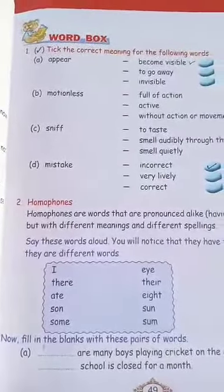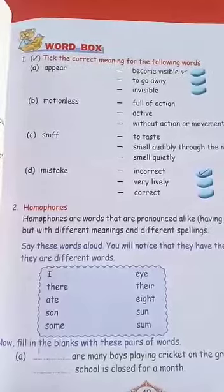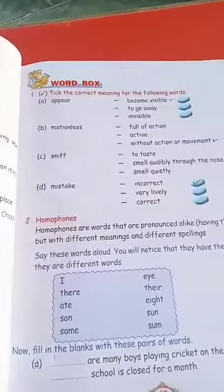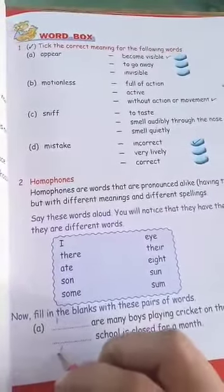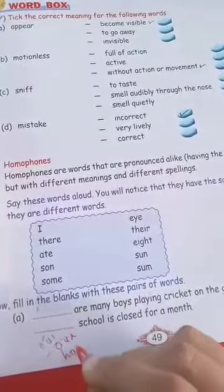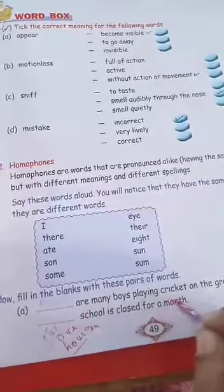Next sentence: 'Dash school is closed for a month.' Yahan OUR ya HOUR? 'Hour' — O-U-R — ghanday bolti hai, that is time. And 'our' — O-U-R — is 'hamara'. So the answer is: 'Our school is closed for a month.'